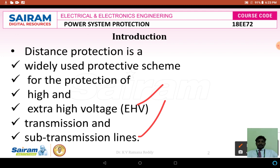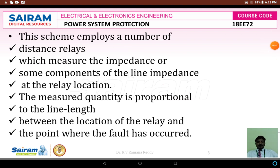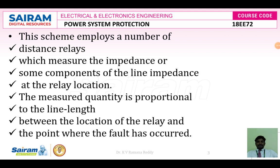As in earlier topics, we have seen different types of overcurrent protective schemes. Distance protection is widely used for extra high voltage transmission and sub-transmission lines. This scheme implies a number of distance relays which measure the impedance or some components of line impedance at the relay location. Earlier we used electromagnetic, static, and numerical overcurrent relays, including microprocessor-based, microcontroller-based, DSP-based, FPGA-based, and artificial neural network types.